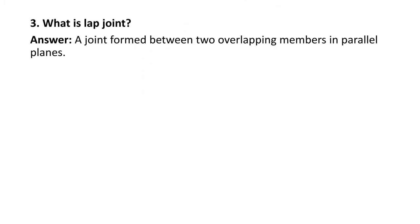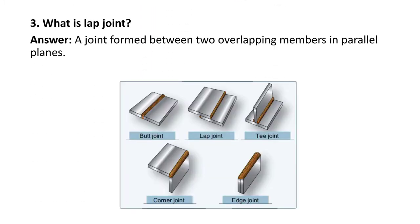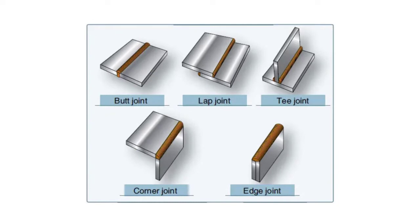Next question: what is a lap joint? A joint formed between two overlapping members in a parallel plane is known as a lap joint. Here you can see different types of joints — butt joint, lap joint, T joint, corner joint, and H joint.